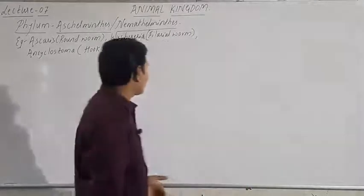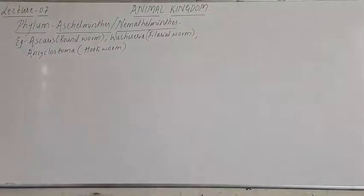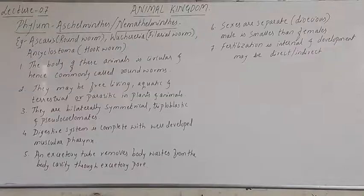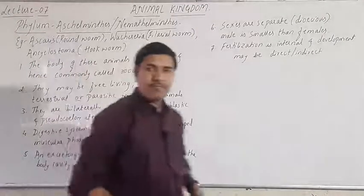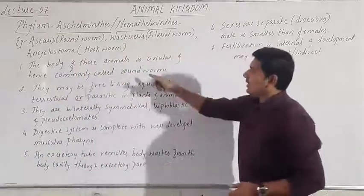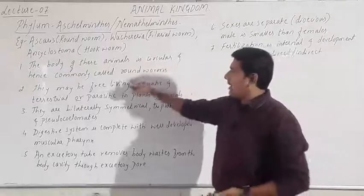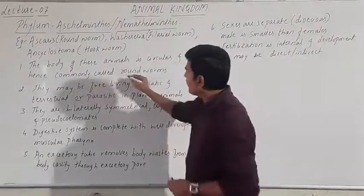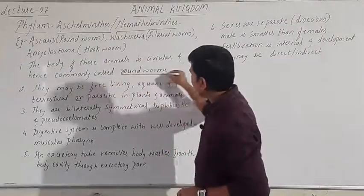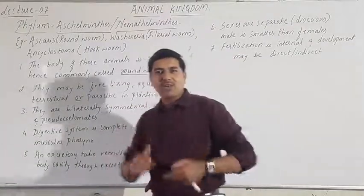Let us look at the general characteristics of phylum Aschelminthes, also called Nematelminthes. The body of these animals is circular — that means rounded. Hence it is commonly called roundworms.